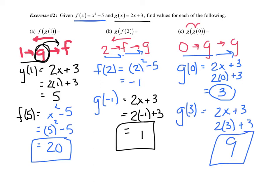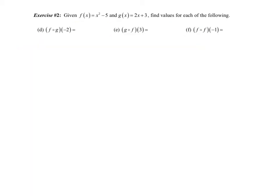I'll give you 3 more — pause it, try each one on your own, then replay it and see if you got the same answers. Remember, it's the same rule just maybe written a little differently — we're still going backwards. For example, negative 2's input goes into G, and G's output goes into F. Pause it and see if you agree with my answers.